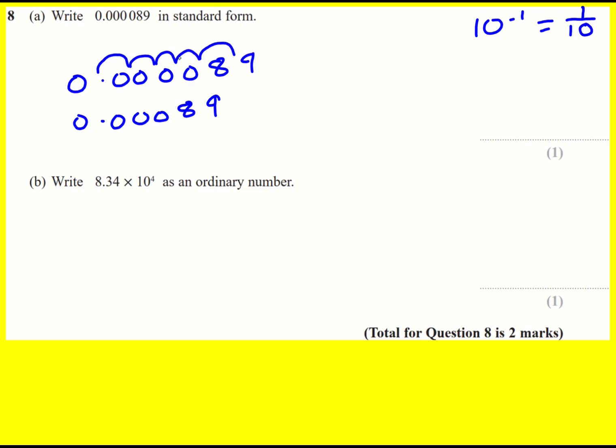So just count how many move along, 1, 2, 3, 4, 5. And it's therefore going to be 8.9 times 10 to the minus 5.